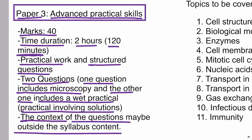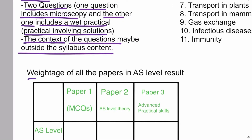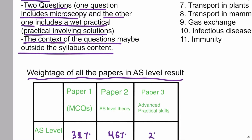If we talk about the weightage of all the papers in your AS level result: Paper 1 has a weightage of 31%, Paper 2 has a weightage of 46%, and Paper 3 has a weightage of 23%, making a total of 100%. As you can see, Paper 2 is the most important paper because it has the highest weightage.